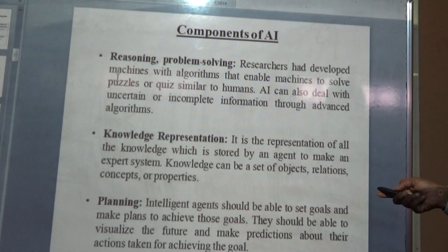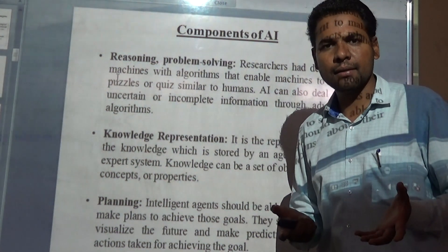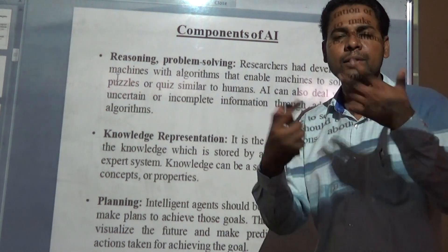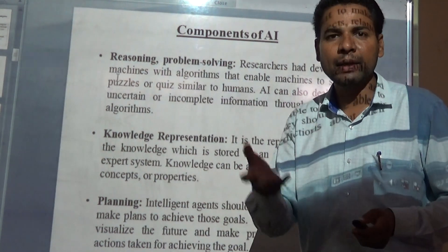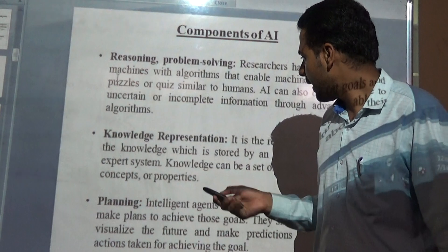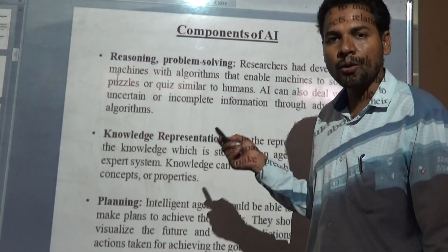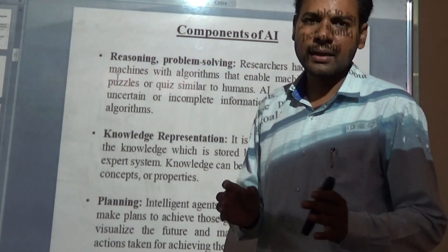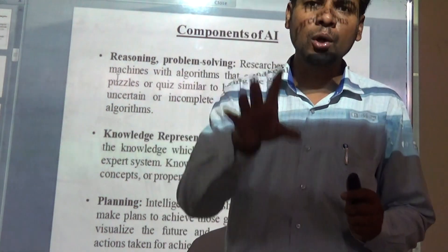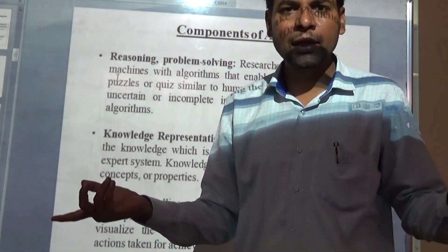Knowledge representation means in what manner the knowledge is to be given to the machine. The way of representing knowledge is called knowledge representation, which is also one very important component of AI. Until and unless you give some knowledge to the machine, it will not behave like a human.